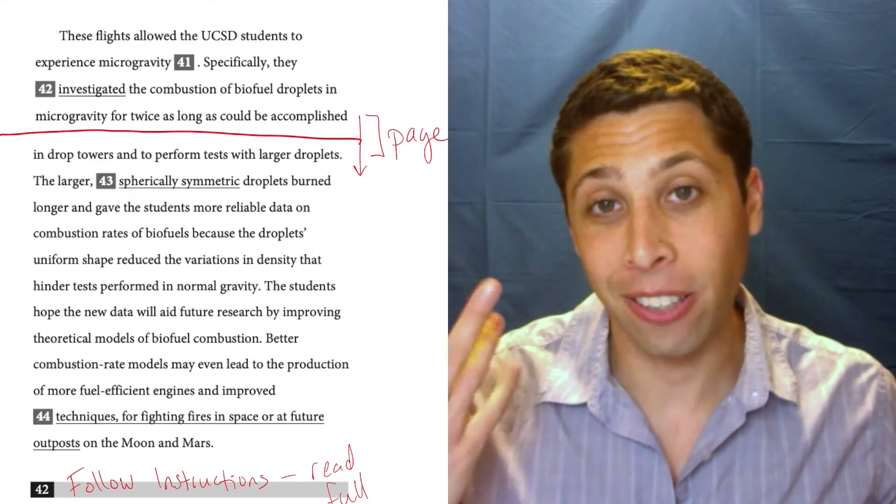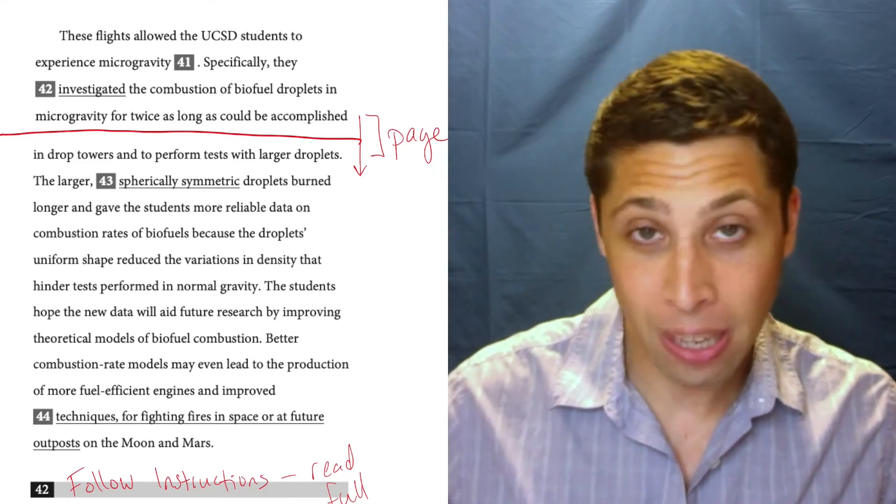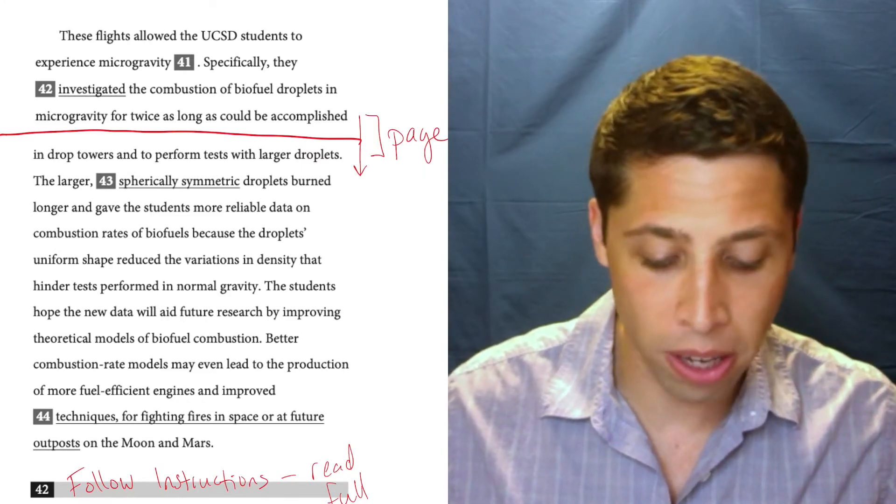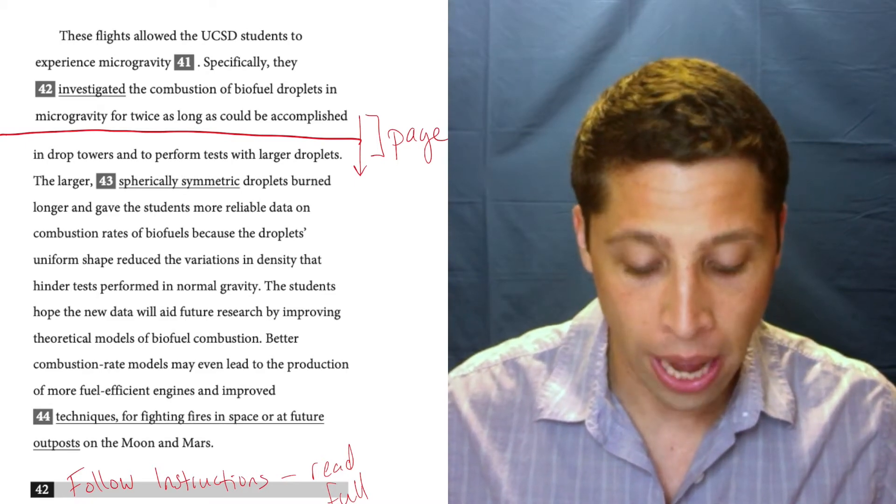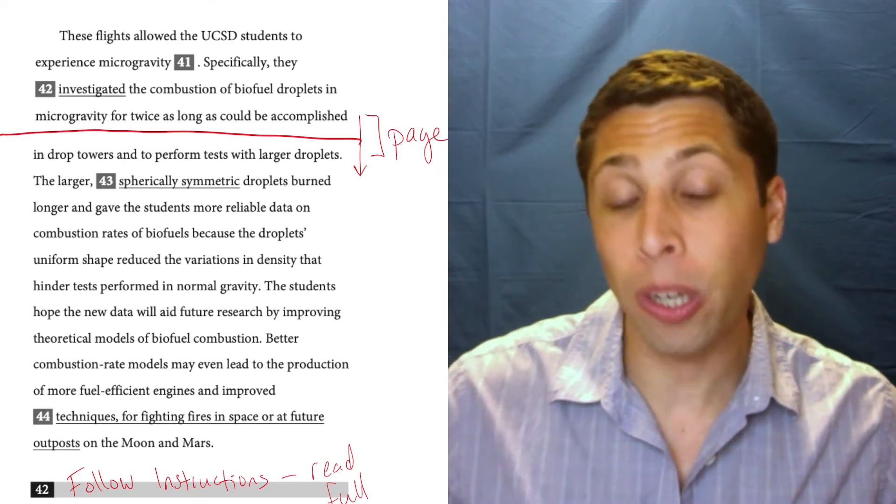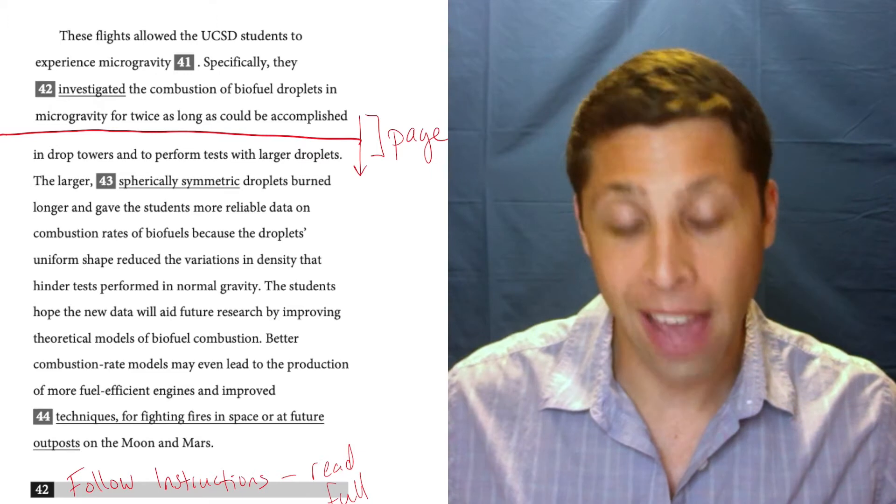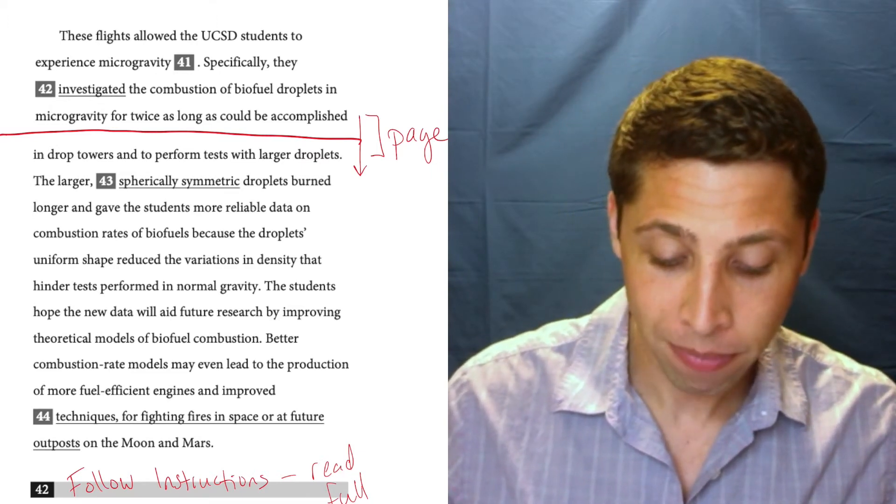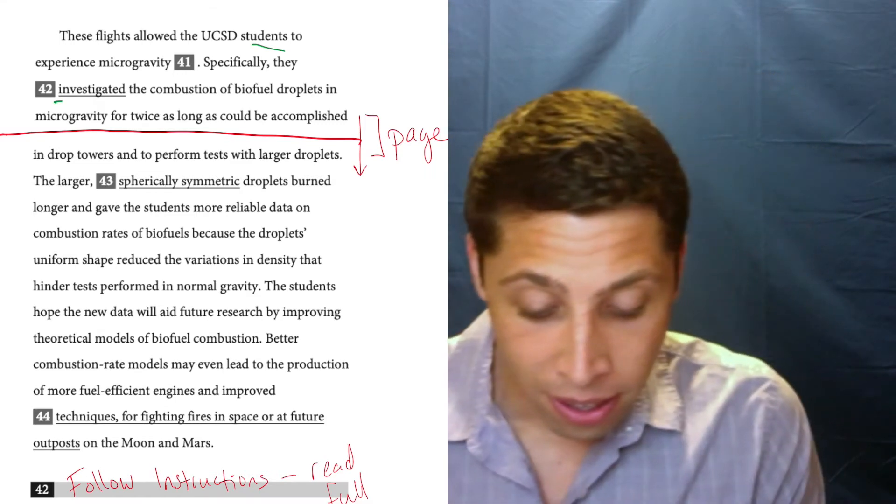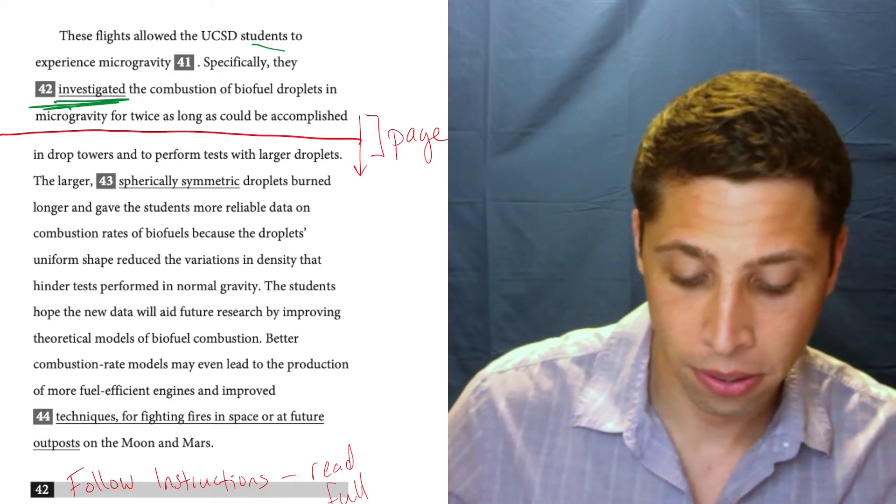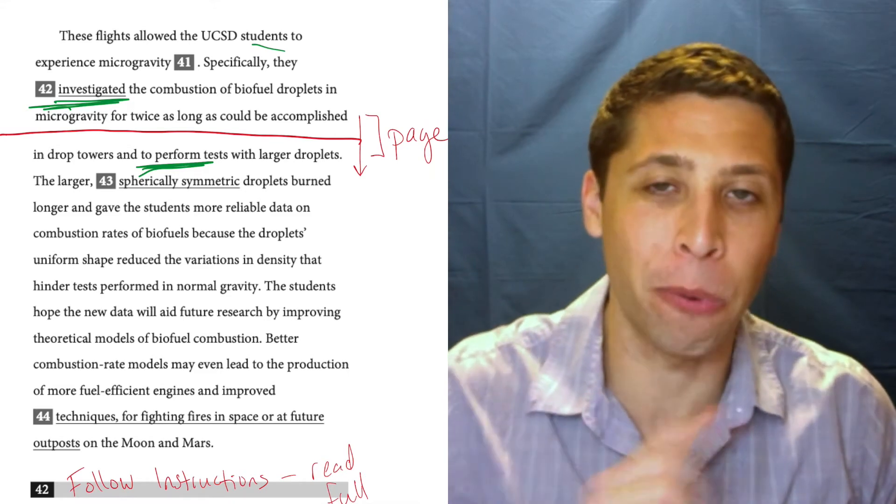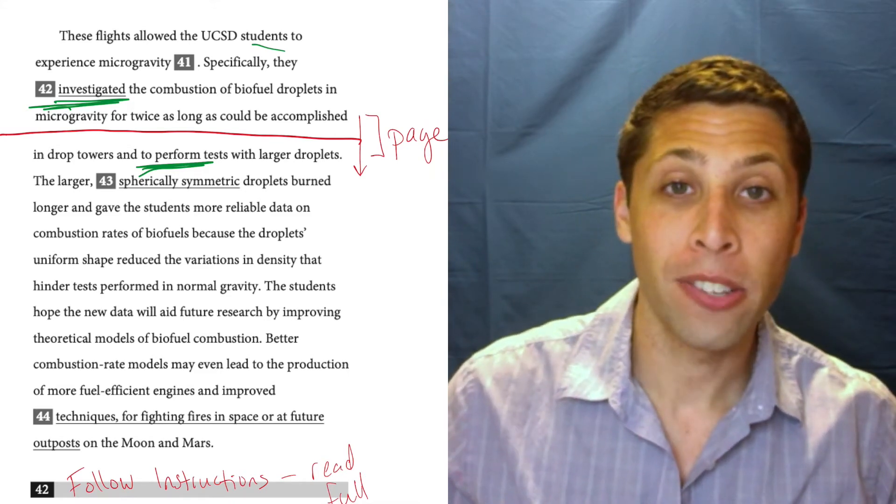If we're just reading what we were given here, we're not pointing to anything—we're just listening to what sounds good. We want to point. So let's keep going: 'specifically they investigated the combustion of biofuel droplets in microgravity for twice as long as could be accomplished in drop towers and to perform tests with larger droplets.' Sounds bad because we're listing two things and they're not in sync—they're out of symmetry. In this case, the students did two things: they investigated the combustion of biofuel droplets and performed tests with larger droplets. But it doesn't say 'perform,' does it? It says 'to perform.'